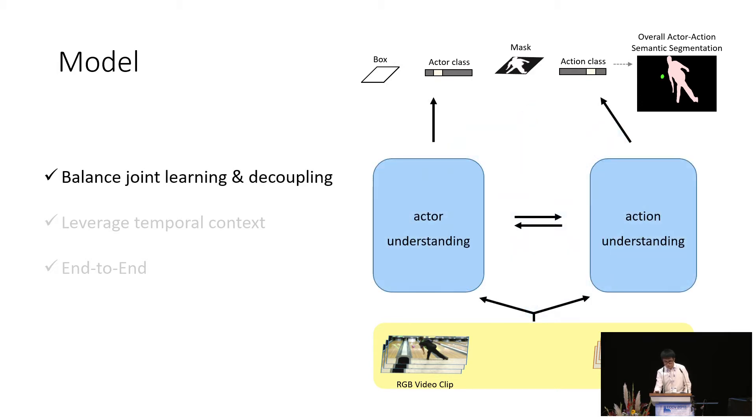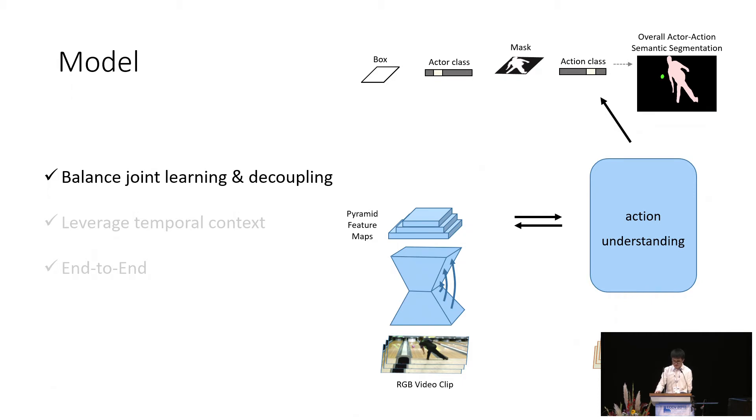To meet our first goal, we partially decouple the model, the network architecture, into an actor and action branch that can communicate with each other. This maintains the ability to train the model jointly in a multi-task fashion so that each subtask can benefit from the others. And we will show this partial decoupling also enables stronger transfer to new actor categories. Let's now see the details of the actor branch. We base the actor branch on Mask R-CNN. We first extract the pyramid feature maps from the RGB video clip and ROI align crops and resizes the feature maps according to object proposals. The aligned feature maps are fed into the output layers that correspond to bounding box regression, actor classification, and actor segmentation. At this point, we are able to localize, segment, and classify each actor.